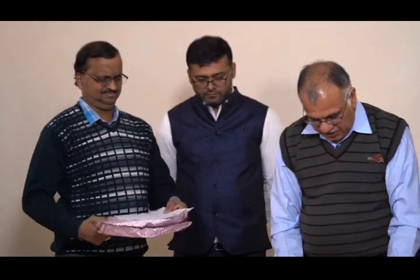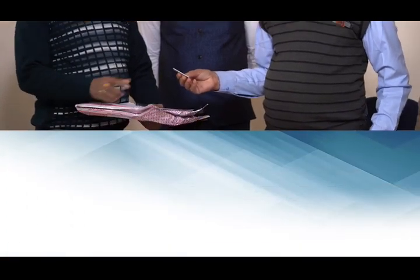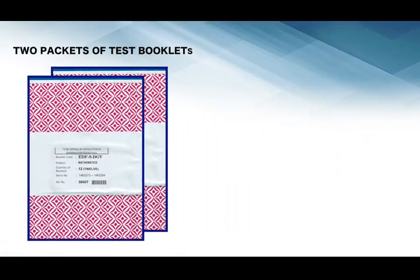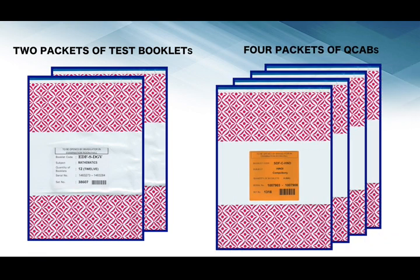Distribute the sealed plastic packets along with cutters amongst the invigilators in the required number. For example, in a room, 2 packets of test booklets or 4 packets of question-come-answer booklets are to be given for 24 candidates.